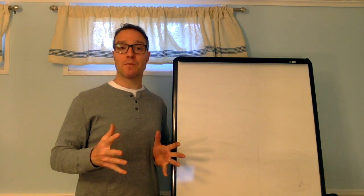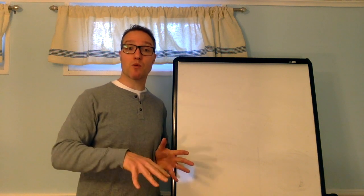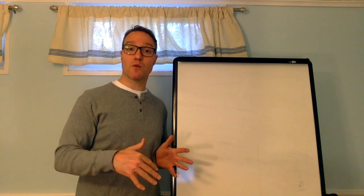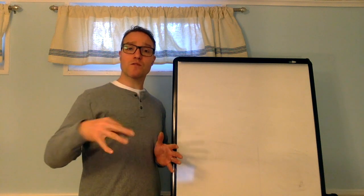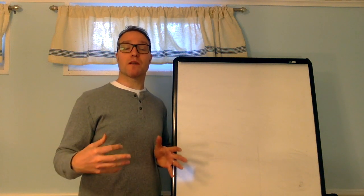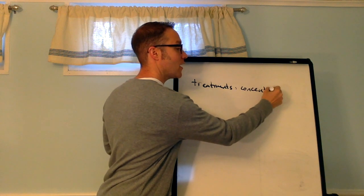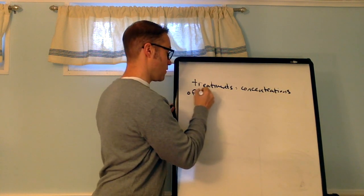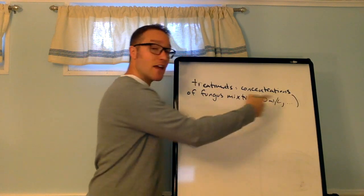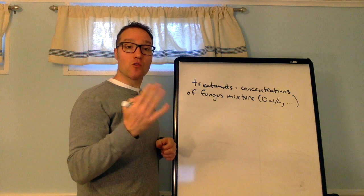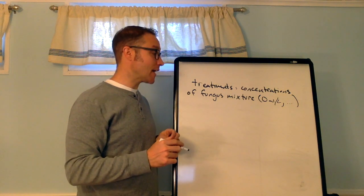So, what is the treatment here? Well, you've got four concentrations of the fungus mixture. Zero milliliters, 1.25, 2.5, and 3.75 milliliters per liter. Those sprays, those mixtures, are the treatments, right? So, there are four treatments here. So, I would write something like, concentrations of fungus mixture. Okay? And then I would actually list out those four treatments. So, if there are four treatments, you want to mention them. Okay? In the context.